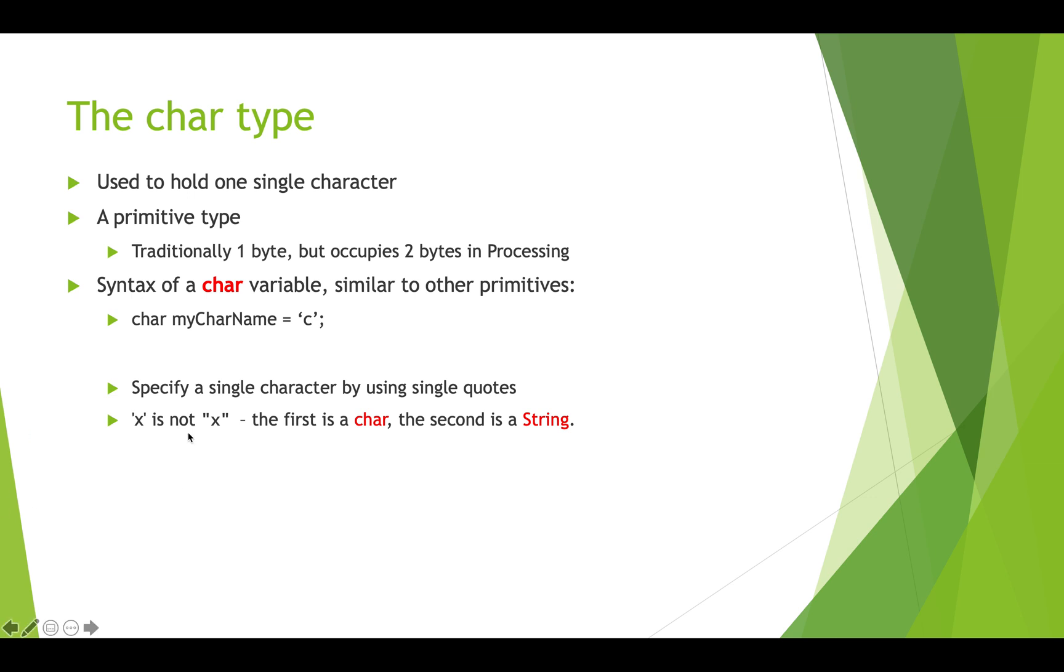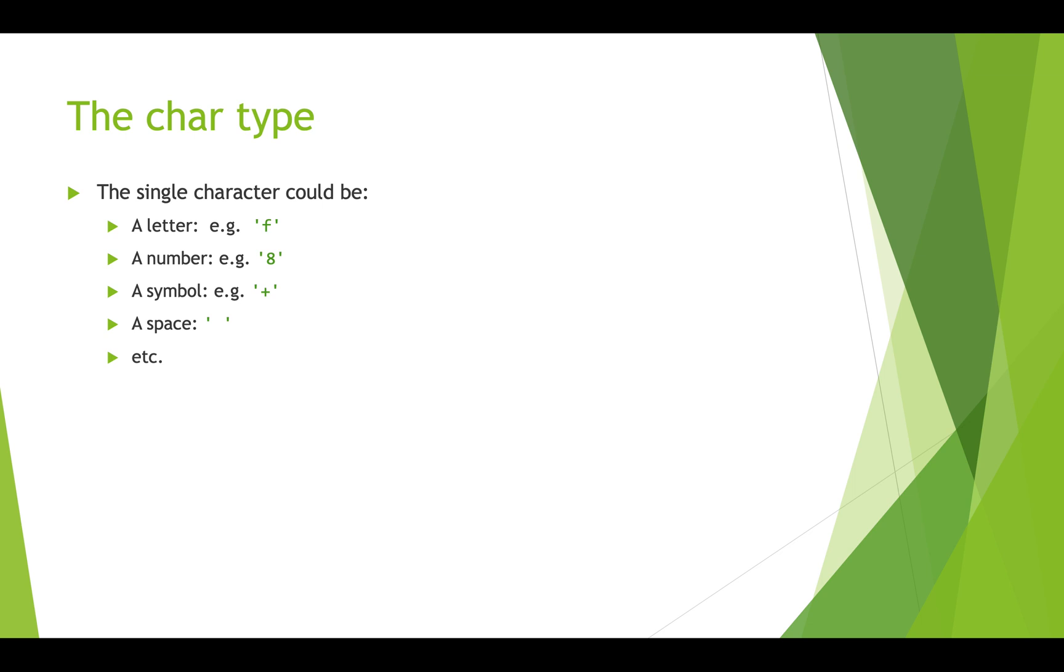If you look at this example, this 'x' in single quotes is a char. This 'x' that's in double quotes is actually a string that just happens to only have one character in it. A single character that can be stored in a char could be a letter, small letter, or capital letter.